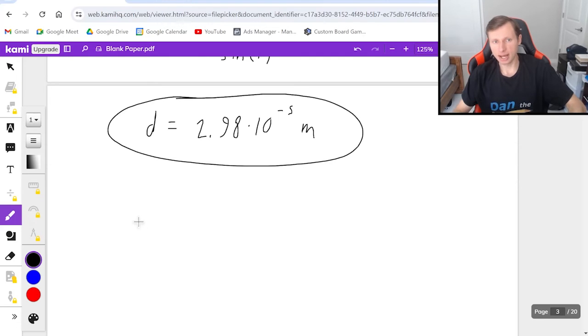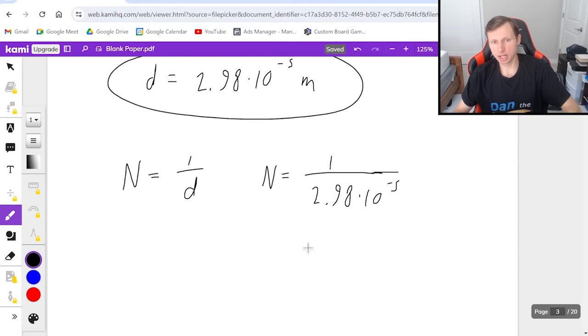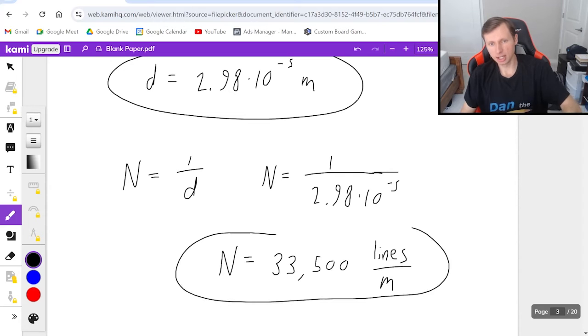And now the second question is find the diffraction grating. So luckily for that, all I have to do is n equals 1 over d. So n equals 1 over the answer I just got a minute ago. You could also accomplish this by just typing in the negative 1 power button in your calculator, which finds the reciprocal.